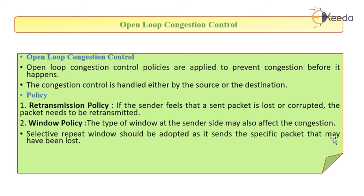Window policy: in this strategy, selective repeat is adopted if a packet has been lost. That means if a sender has sent packet frame numbers 0, 1, 2, 3, and frame 3 is lost, then the sender has to retransmit frame 3 only and not the rest of the packets.